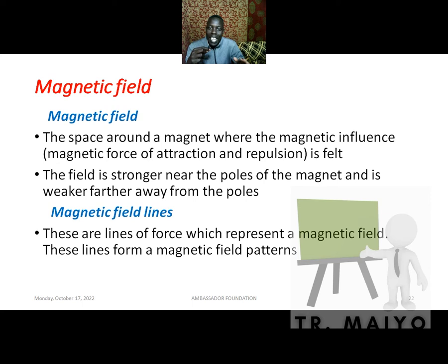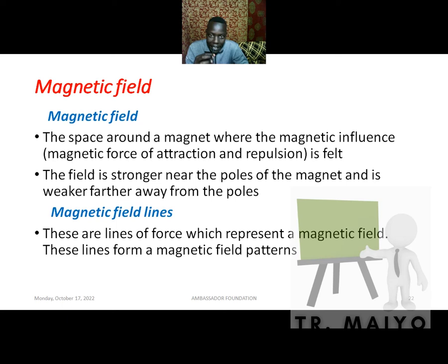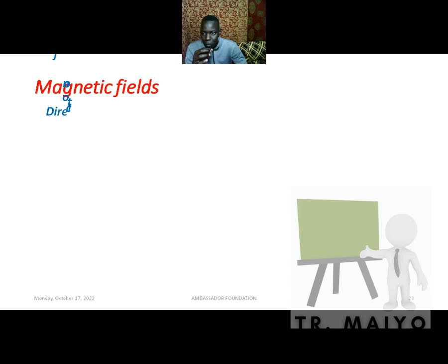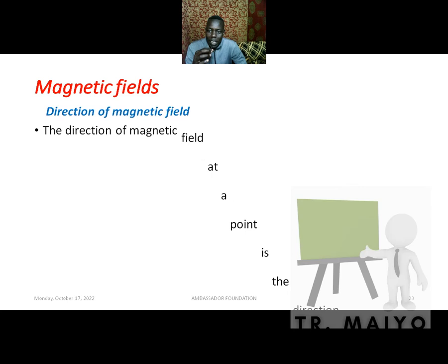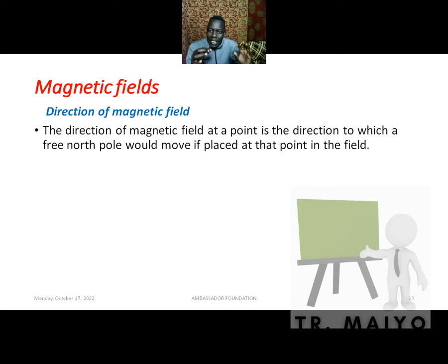Now let's look at magnetic fields. We have seen that magnetic field patterns are specifically made up of magnetic field lines — lines of force which represent a magnetic field. It is these lines that form magnetic field patterns. We are also going to look at the direction of a magnetic field — a term we need to define.